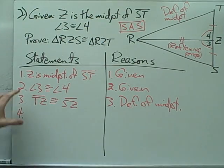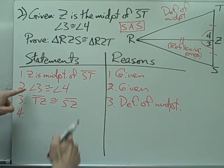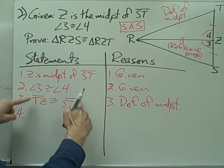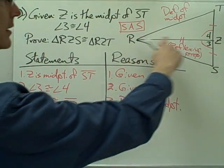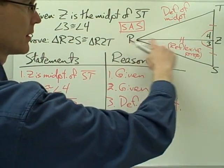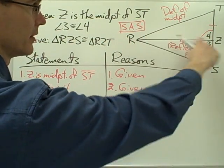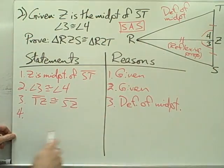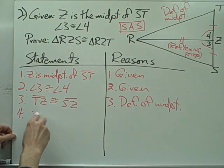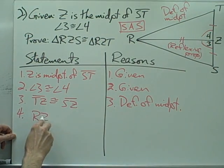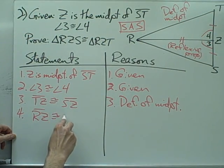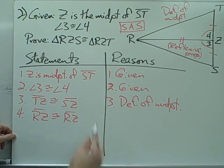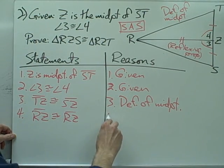So what else do I need? I have these two angles congruent, I have these two segments congruent. I need this other side of my triangle congruent — I need to say segment RZ is congruent to itself.